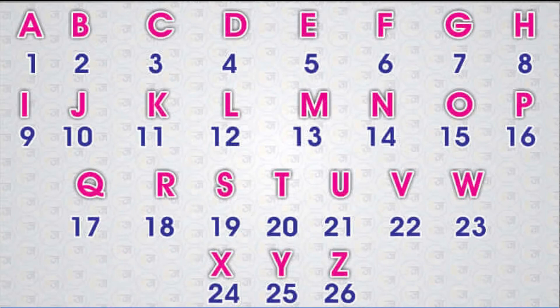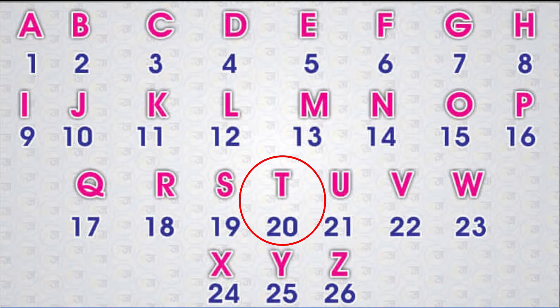Today we are going to learn about the letter T. Let's see the English alphabet first. There are 26 letters in the English alphabet. T is the 20th letter of the English alphabet.